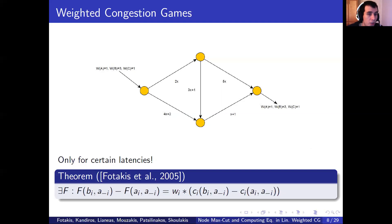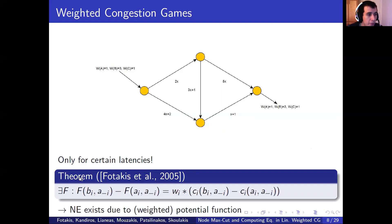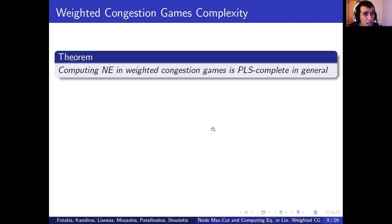Hence, for the case of linear weighted congestion games, you can consider them again as a local search problem, just as their unweighted variant, which places them in PLS. Indeed, the potential found by Fotakis and Tal allows us to prove that the equilibrium must exist. However, in this case, as opposed to the unweighted case, the only assessments we can make regarding its PLS complexity are only those that can be concluded trivially.